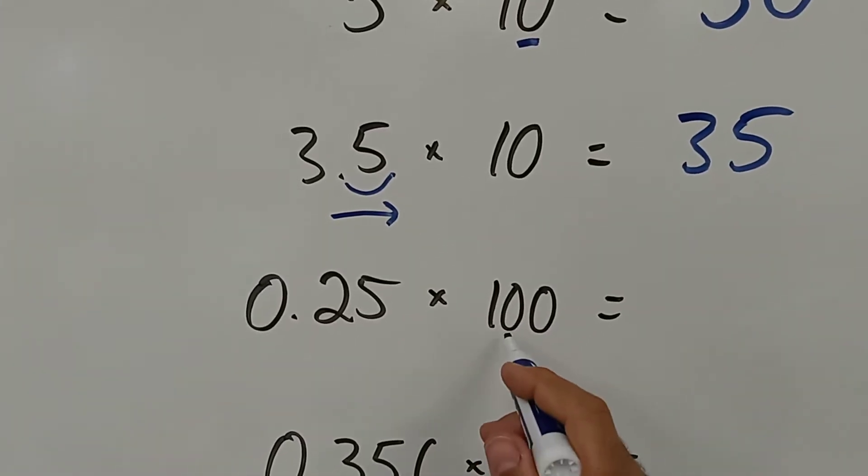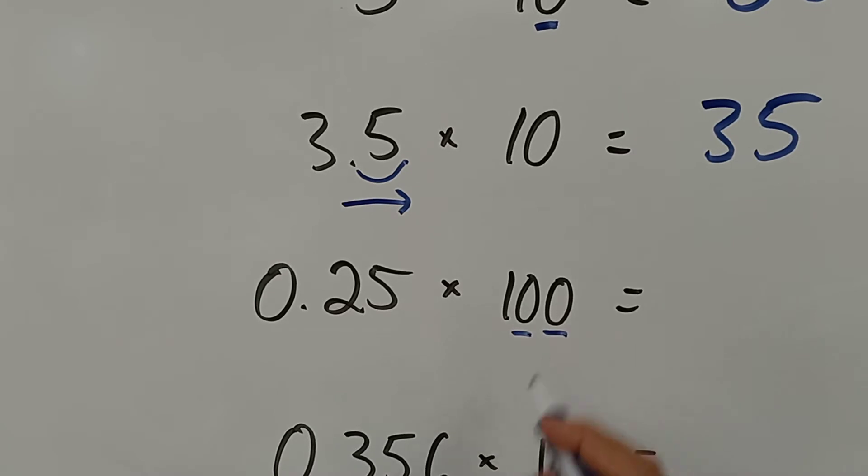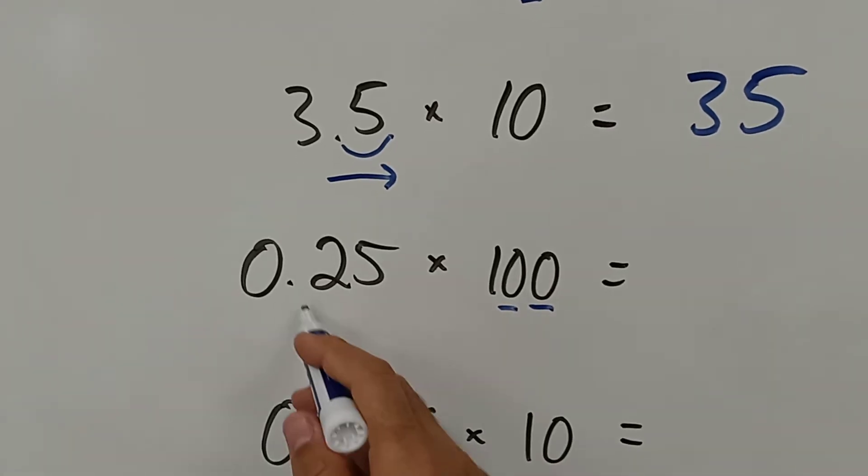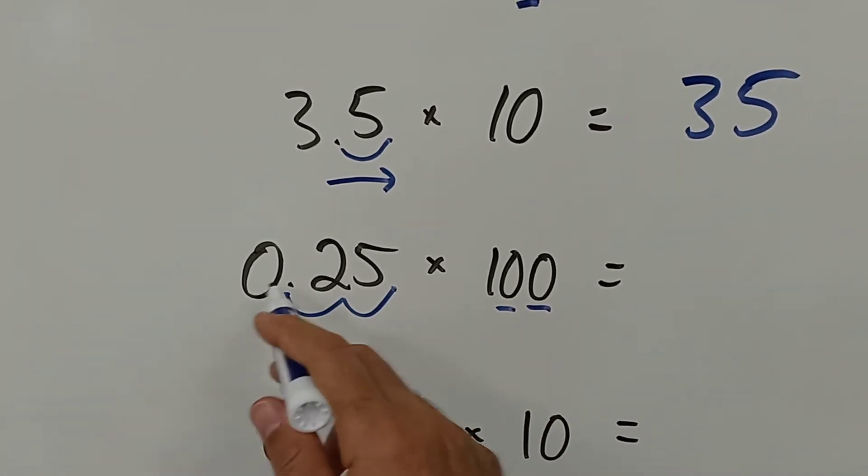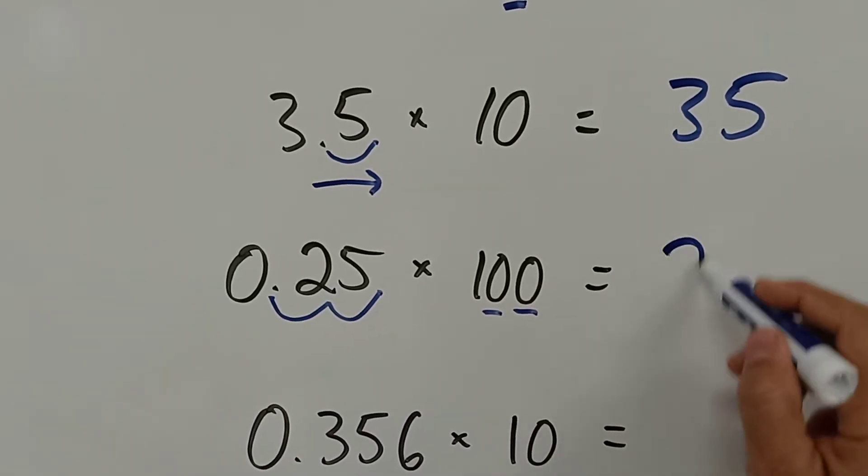When you multiply by 100, you do the same thing but this time two zeros, it moves the point two spaces: 1, 2. So 0.25 times 100 is 25.